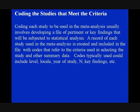Coding the studies that meet the criteria. Coding each study to be used in the meta-analysis usually involves developing a file of pertinent or key findings that will be subject to statistical analysis. A record of each study used in the meta-analysis is created and included in the file, with codes that refer to the criteria used in selecting the study and other summary data. Codes typically used could include level, locale, year of study, N, or key findings.